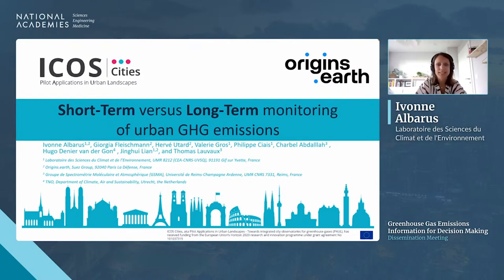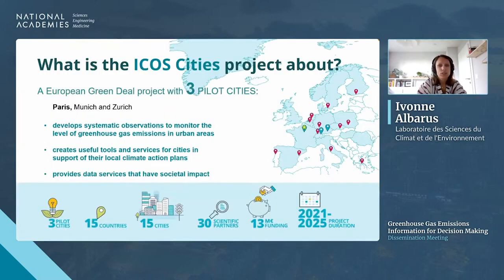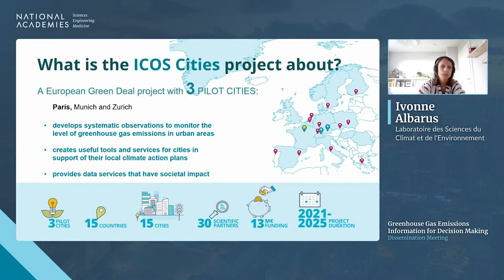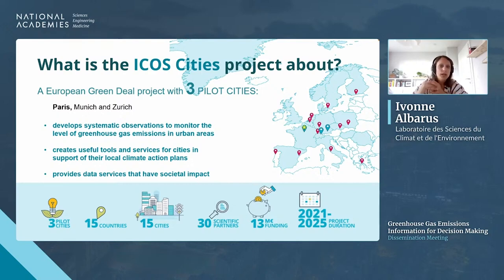In Europe we have a project called ICOS Cities, within the Green Deal, started about 18 months ago. It's one of the world's first coordinated networks bringing together 15 different cities from 15 European countries, concentrating on testing a comprehensive urban GHG measurement technique that aims to provide data services with societal impact — comparable to what Kim described with the NIST urban test beds.